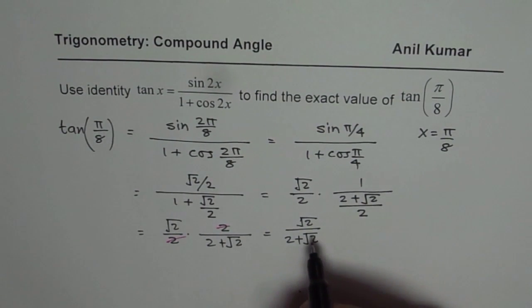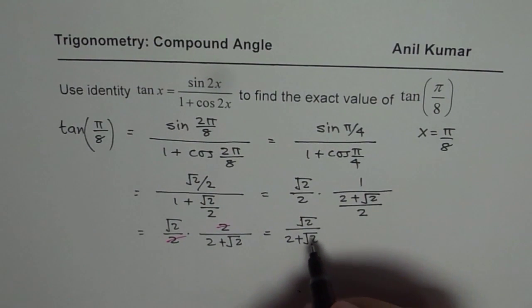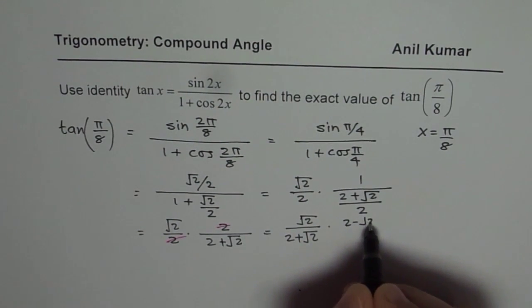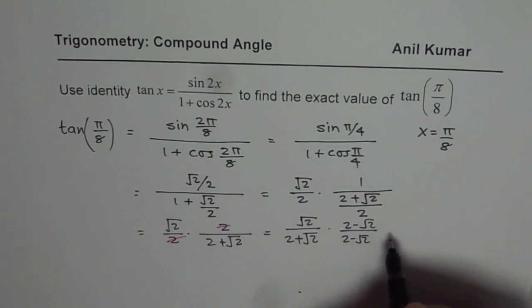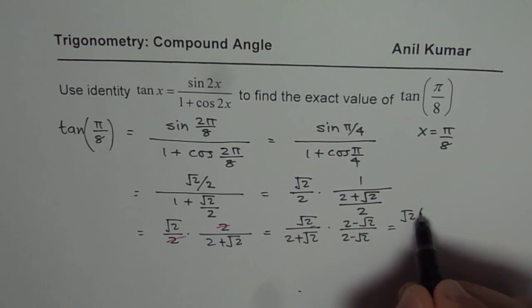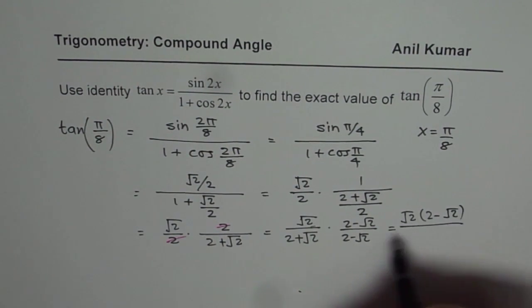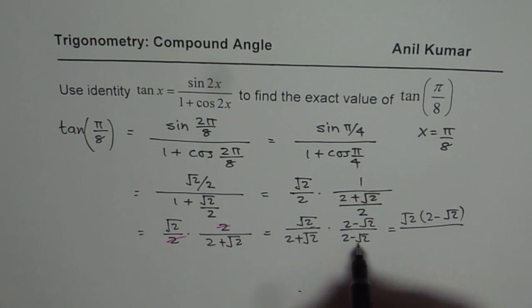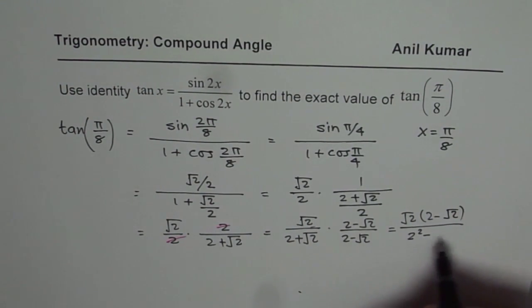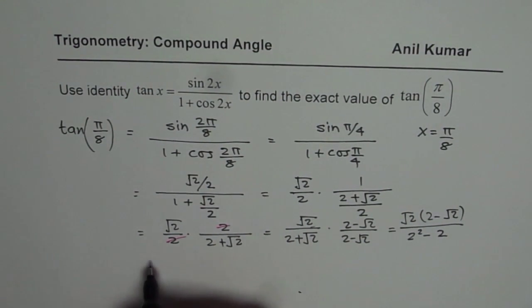So in that case, we need to rationalize this. To rationalize, we have to multiply and divide by 2 minus square root 2. When you do that, in the numerator, you get square root 2 times 2 minus square root 2. In the denominator, we get 2 square minus 2. 2 square is 4. Let me write 2 square minus square of square root 2, which is 2.